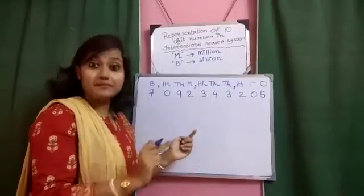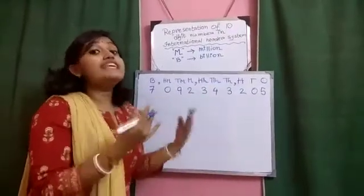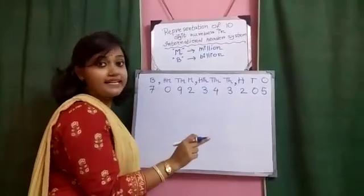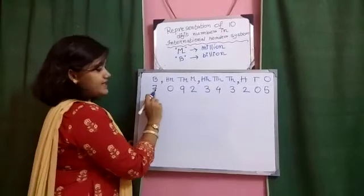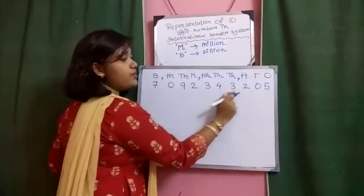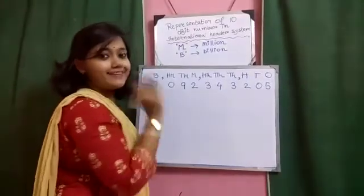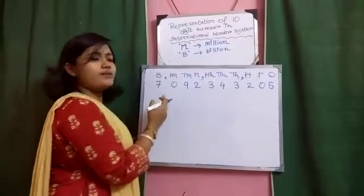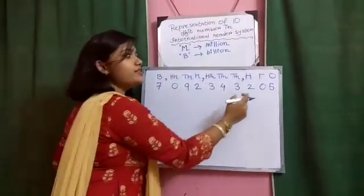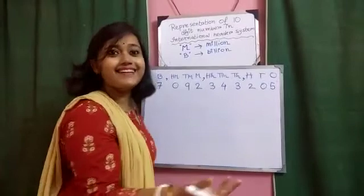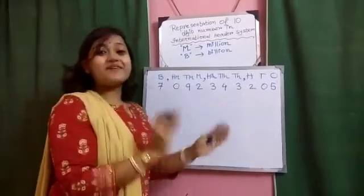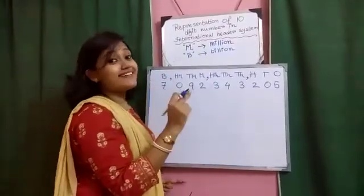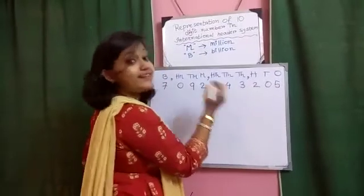Now, we are going to write down one number and we will learn how to read this number. So, same example I have used, what I have already used for Indian header system. That's 7092343205. Oh my God! The 10 digit number, how to read it out? In this way, I cannot read it, na? Let us read this number with its proper header. So, we should put the separator at the beginning.